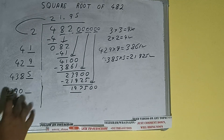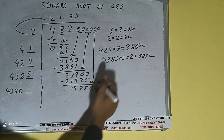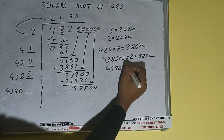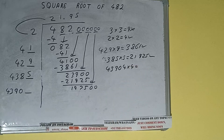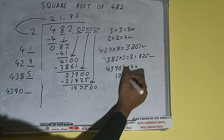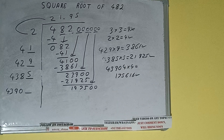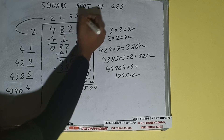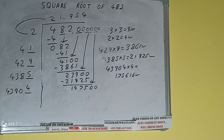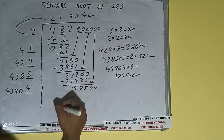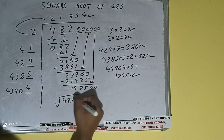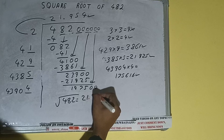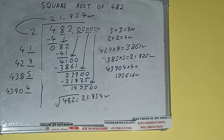43 times 4 is 172, so we can try 4 times. 43904 into 4 — we'll be having 175616, which is good to take. So 4 here and 4 here. We don't need to calculate further because we got the answer correct up to three decimal places. So the square root of 482 will be 21.95.